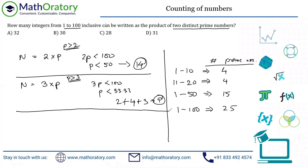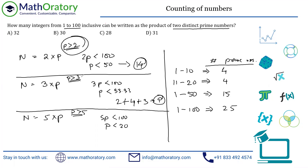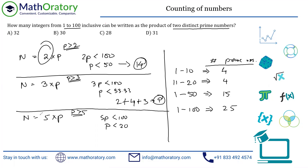Case 3: n = 5 × P where P > 5. So 5P < 100, meaning P < 20. From 1 to 20 there are 8 prime numbers, but we exclude 2, 3, and 5 which have already been considered. So effectively we have 8 − 3 = 5 prime numbers satisfying this case.